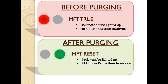This picture clearly depicts the condition before and after boiler purging. Before boiler purging, MFT — Master Fuel Trip — is in the true condition. When MFT is in the true state, it does not allow the boiler to be lit up, and there will be no boiler protection in service. After completion of the 5-minute purge cycle, MFT resets. As MFT is no longer persisting, we can go ahead for boiler light up and all boiler protections are in service. We will discuss boiler light up in the next tutorial.